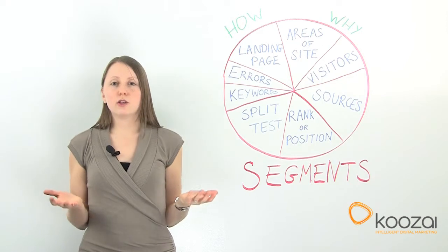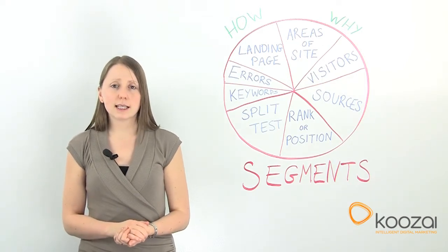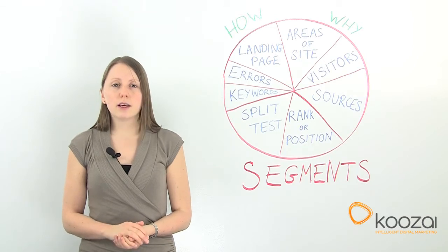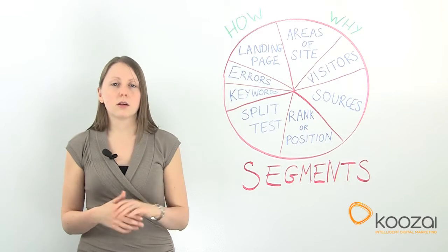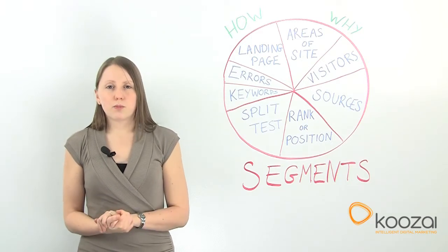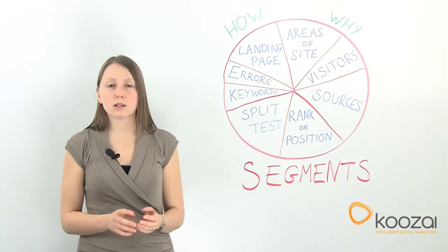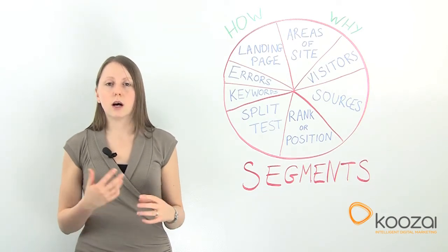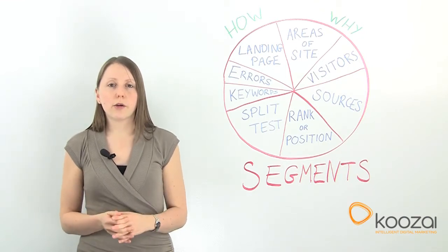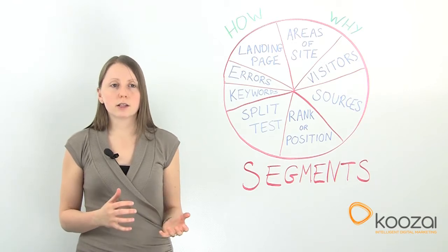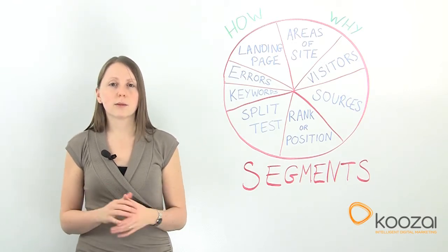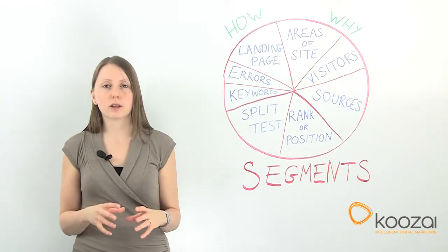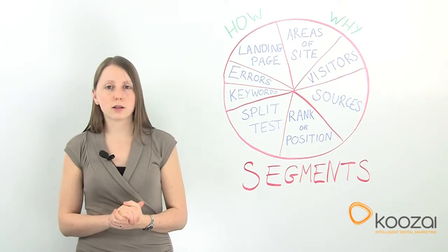So where can you see segments? The easiest place is Google Analytics, where you can use the default advanced segments or create your own custom advanced segments. These easily show you the data and can apply it historically. Options within Google Analytics that can't be applied historically include custom variables, which are really good for choosing the segments you want and working out which visitor fits which segment.